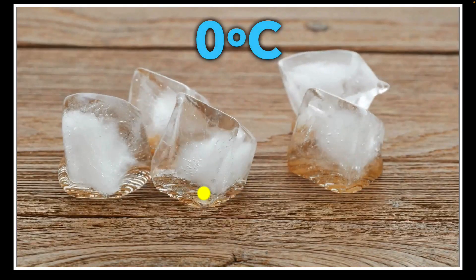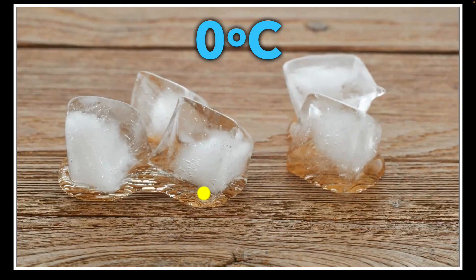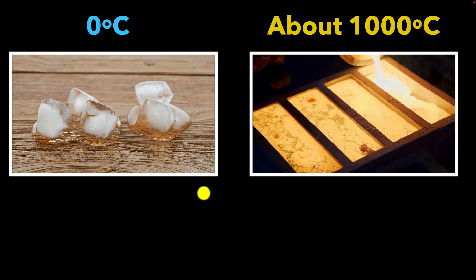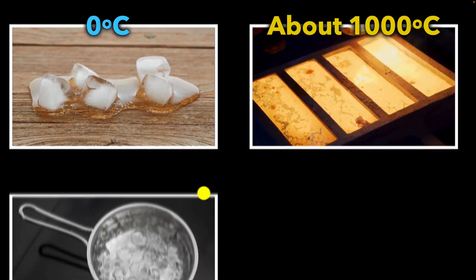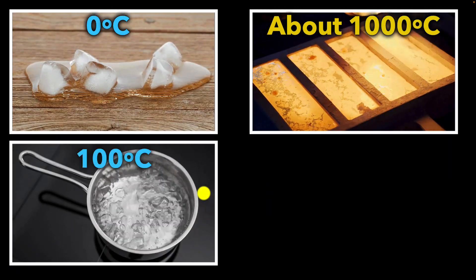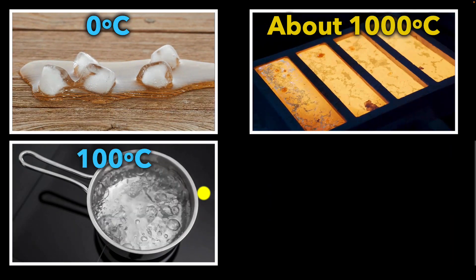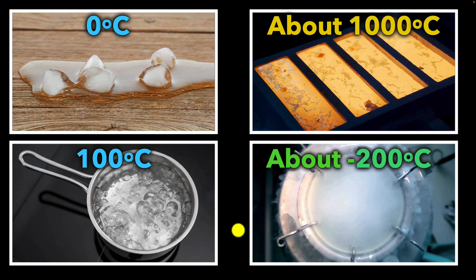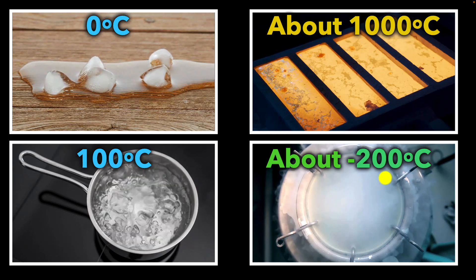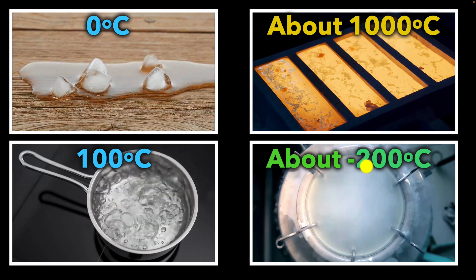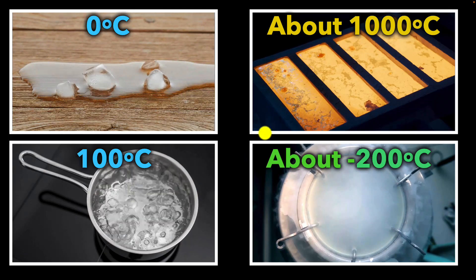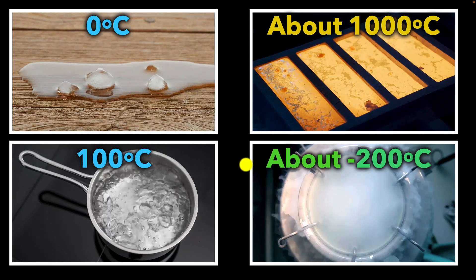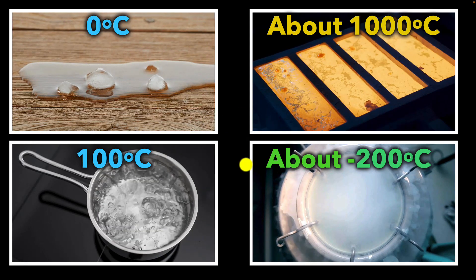Ice melts at 0 degrees Celsius, but if you take something like gold, then it'll melt only above 1000 degrees Celsius. Similarly, water boils at around 100 degrees Celsius, but if you take something like nitrogen, it'll boil at a very low temperature of negative 200 degrees Celsius, slightly above that. But the big question is, why do different materials have different melting and boiling points? Let's find out.